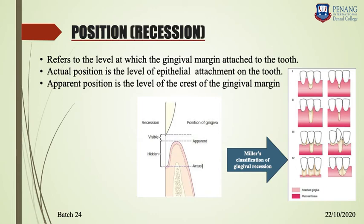Based on gingival recession, Miller classified it into Grade 1, 2, 3, and 4. These details will be covered when we start taking classes on gingival recession and its management. Basically you have to know what is apparent recession, what is actual recession, and how recession differs from a periodontal pocket.